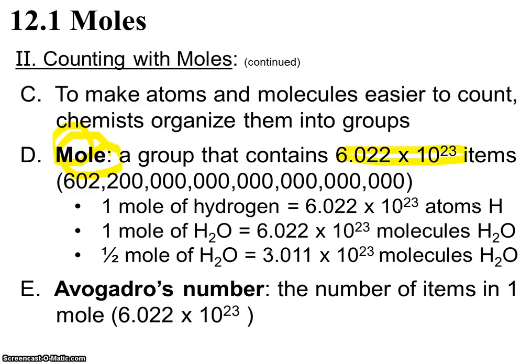So to make it easier to count, chemists are going to organize them into groups and the group we use is called a mole. A chemistry mole is a group of atoms that has that really big number 6.022 times 10 to the 23rd, or you could write it out. That's how many items there are. You could have a mole of donuts or a mole of rice, but we usually use the mole to refer to chemistry things like atoms and molecules.